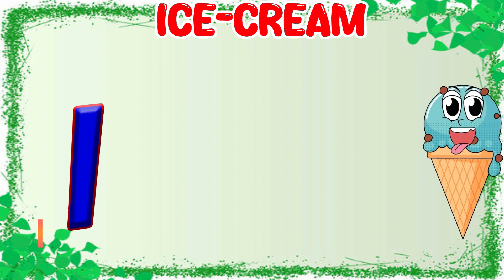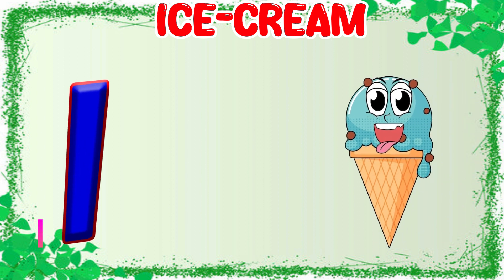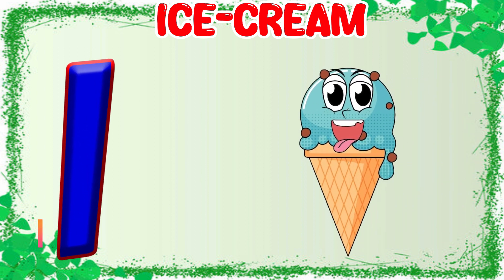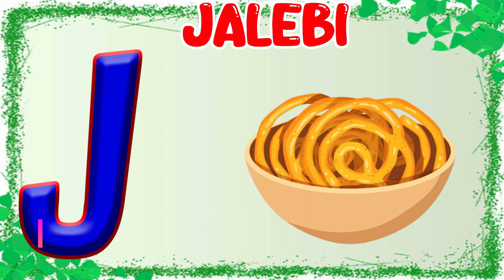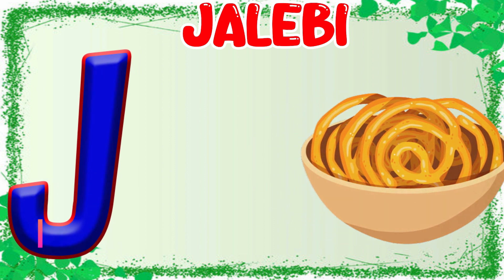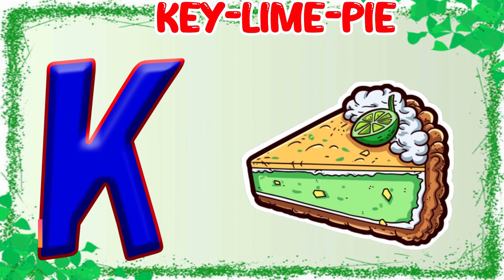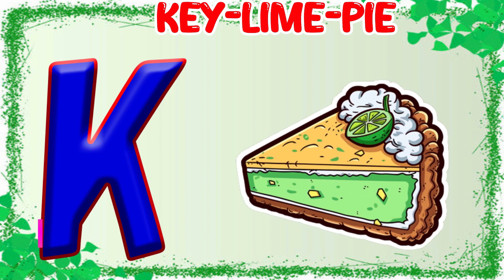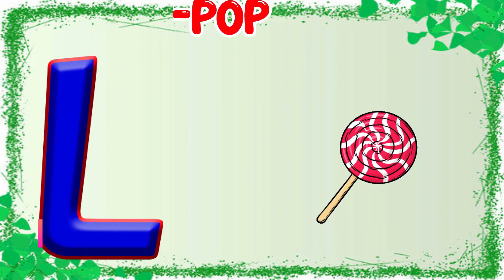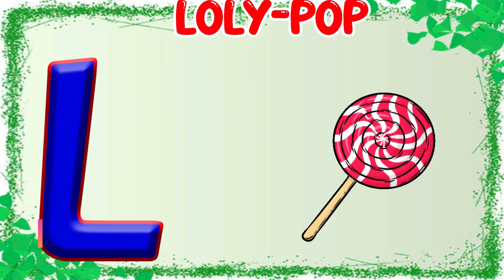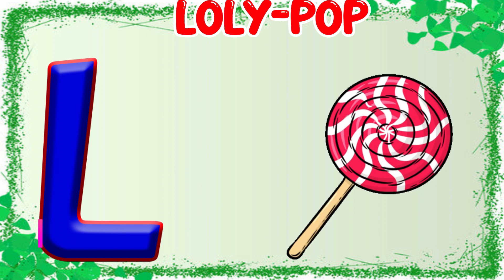I is for Ice Cream. I. Ice Cream. J is for Jelly Bean. J. Jelly Bean. K is for Key Lime Pie. K. Key Lime Pie. L is for Lollipop. L. Lollipop.